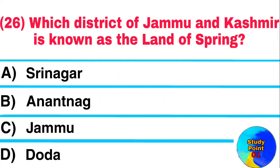Question: Which district of Jammu and Kashmir is known as the Land of Spring? Answer: Anantanag.